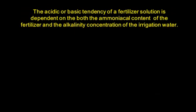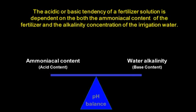When we talk about a fertilizer solution's tendency to change pH, the acidic or basic tendency is dependent on both the ammoniacal nitrogen content of the fertilizer and the alkalinity concentration of the water. Think of the pH reaction of a fertilizer solution as a balance: on one side you have the ammoniacal nitrogen content — the acid content — and on the other side you have the water alkalinity — the base content. You're trying to balance the acid and the base to get a neutral reaction in the mix.